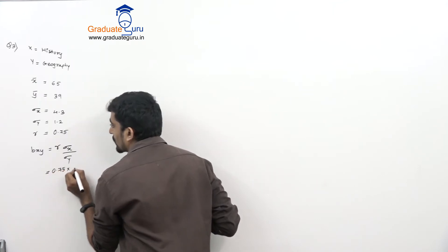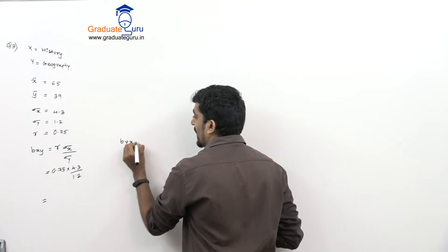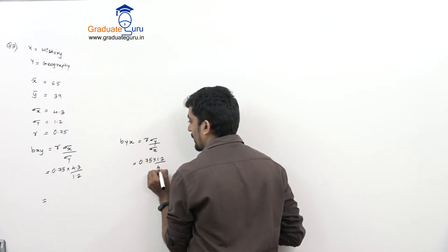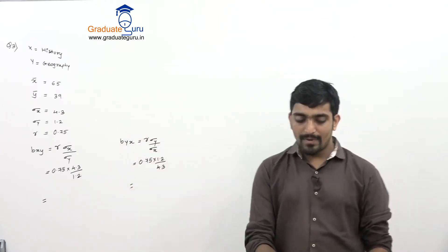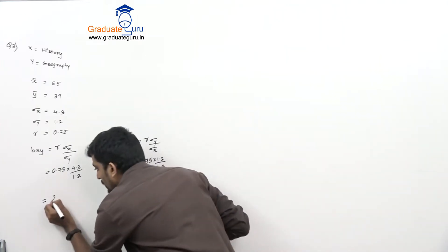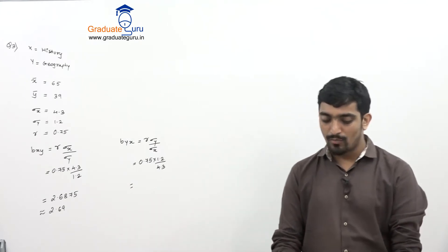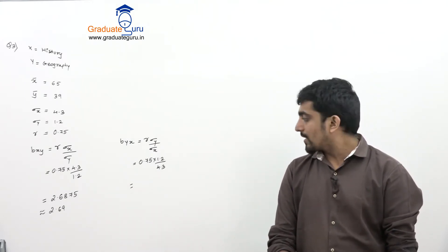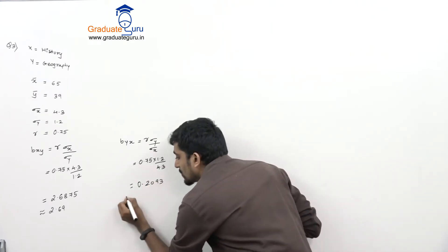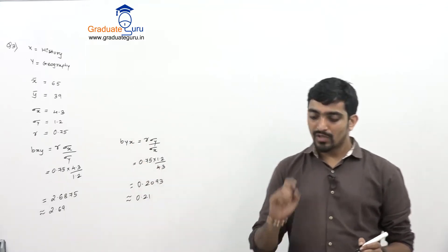So bxy = 0.75 × 4.3 / 1.2. And similarly byx = r × sigma y / sigma x = 0.75 × 1.2 / 4.3. Computing: bxy = 0.75 × 4.3 / 1.2 = 2.6875, which rounds off to 2.69. And byx = 0.75 × 1.2 / 4.3 = 0.2093, which rounds off to 0.21. So bxy and byx are obtained.